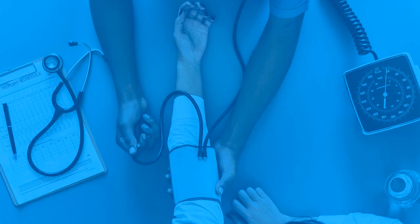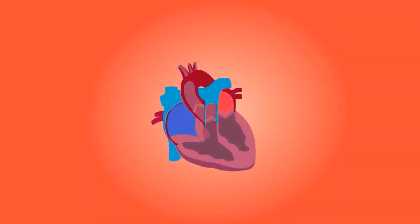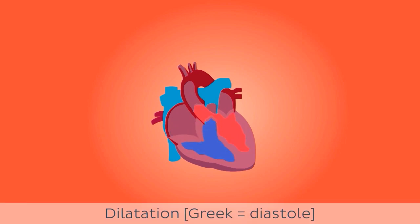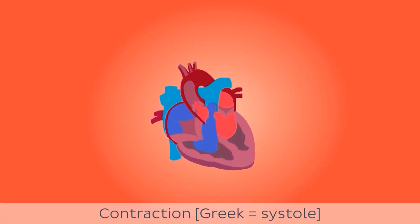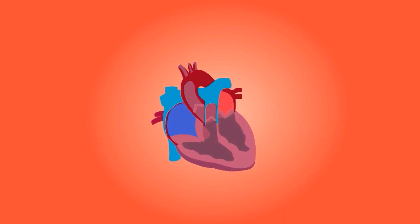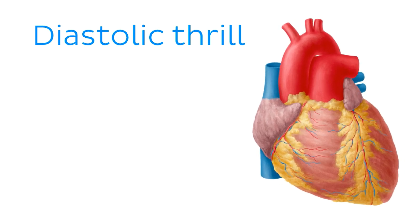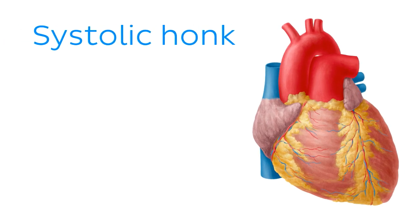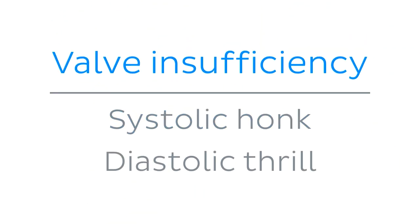Finally, let's speak about blood pressure, where there are two essential terms worth knowing. The filling and pumping of blood happens in a rhythmic manner. The resting period, when the heart chambers relax and fill with blood, is called diastole, whereas the contraction period is called systole. You might see some strange terms coupled with diastole and systole in clinical practice, such as a diastolic thrill — a vibration felt over the heart during diastole — or a systolic honk, a music-like murmur heard during systole, not unlike that made by a goose. Both of these conditions often indicate some kind of valve insufficiency.